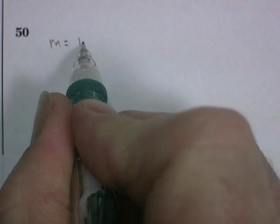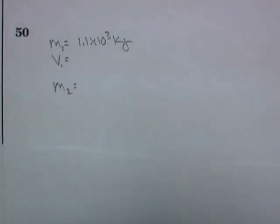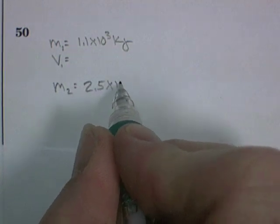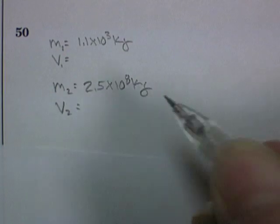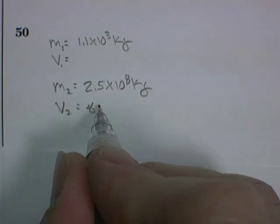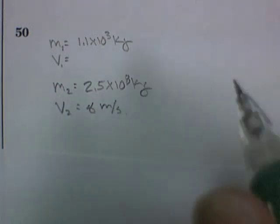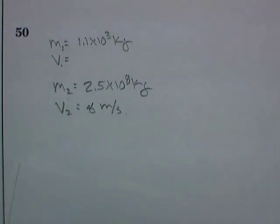Let's see. I've got a car. The mass of the car is 1.1 times 10 to the 3 kilograms, traveling at some unknown velocity. It's going to hit the mass. We'll call that M1 and V1. I'm going to hit a truck, M2, or a van. That's 2.5 times 10 to the 3 kilograms, traveling at a velocity of 8 meters per second. They hit, and they come to rest.